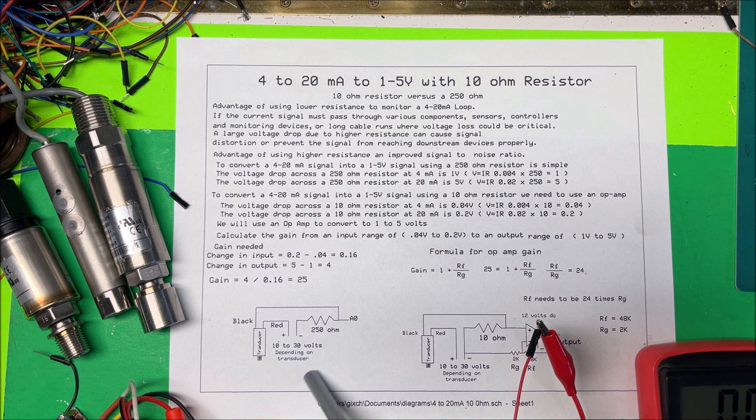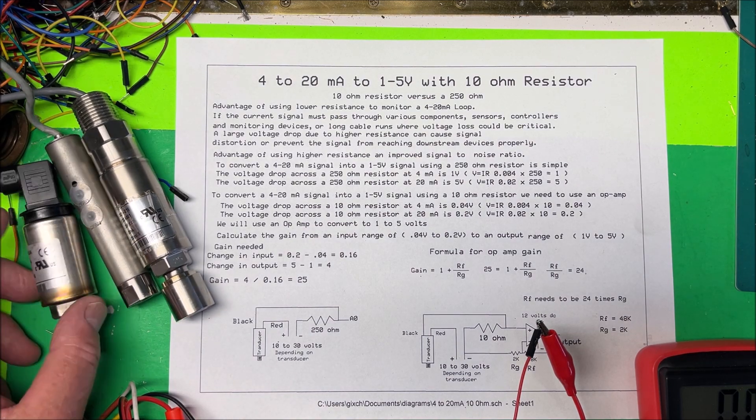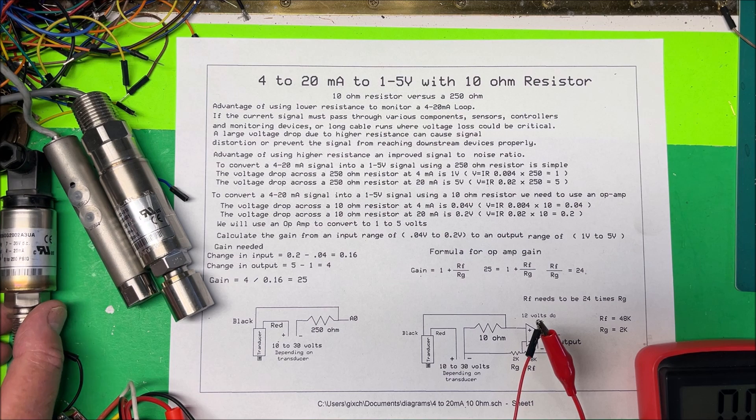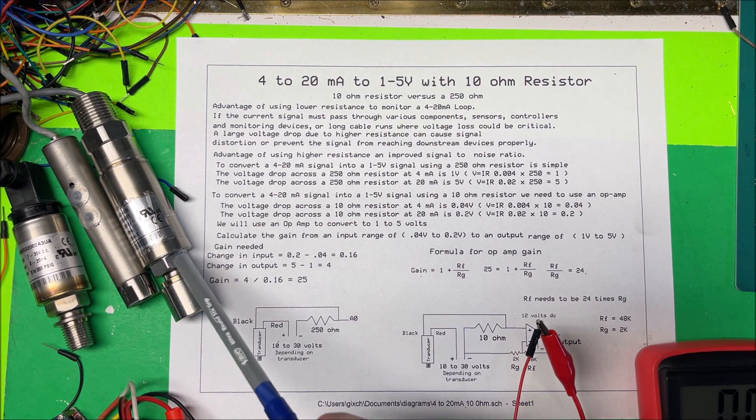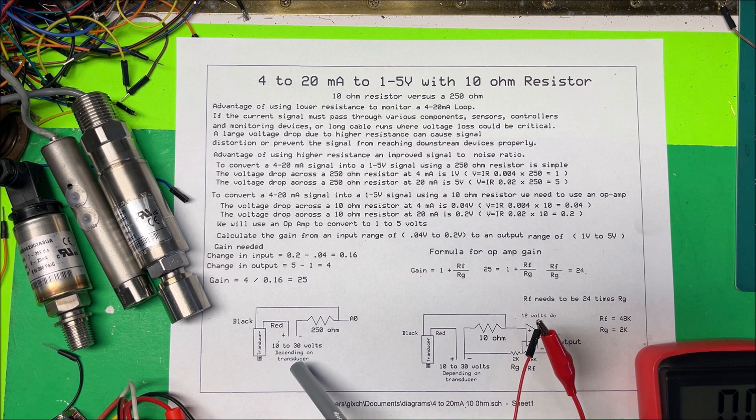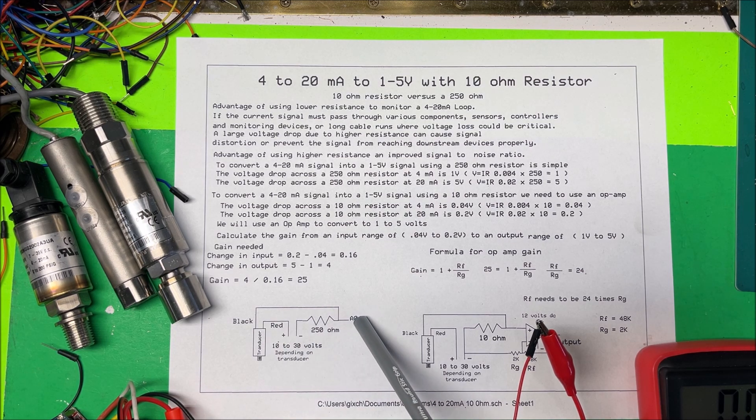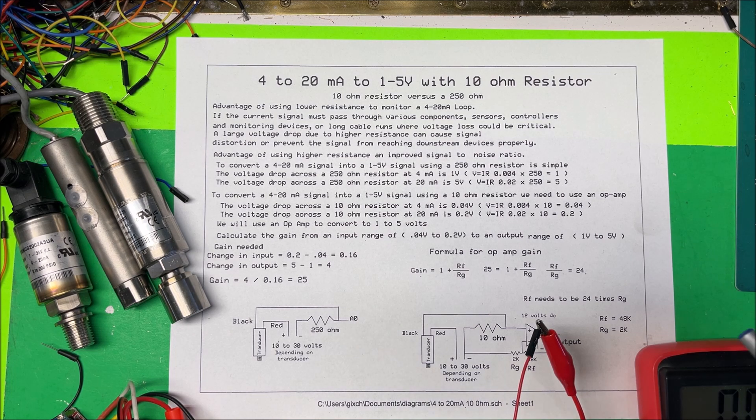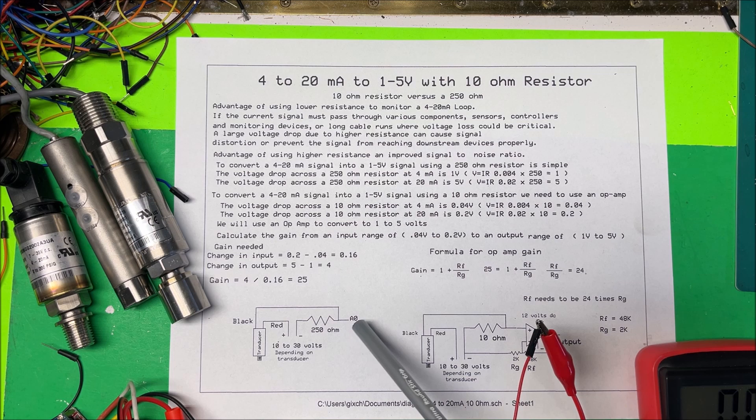This one's good from 7 to 35 volts, so depending on your transducer you can just put your voltage in there. Then coming out here it's going to go to the analog input on your controller, and you're going to put in 1 to 5 volts and it's going to correspond to how much pressure you have over here.